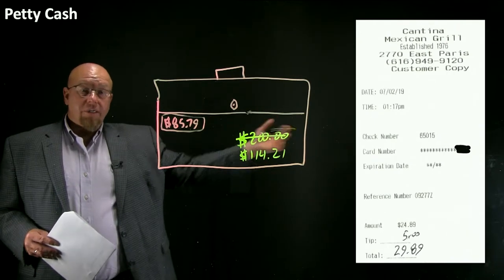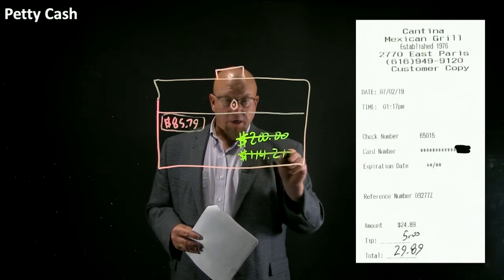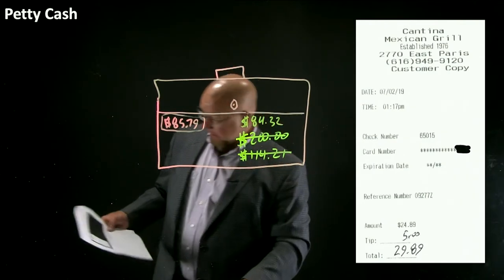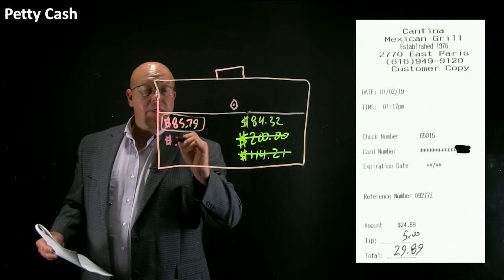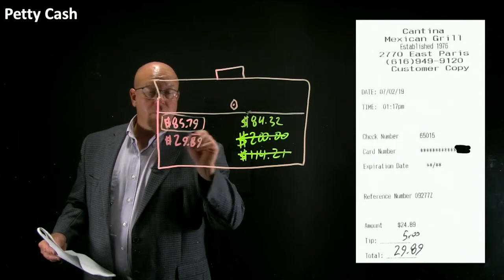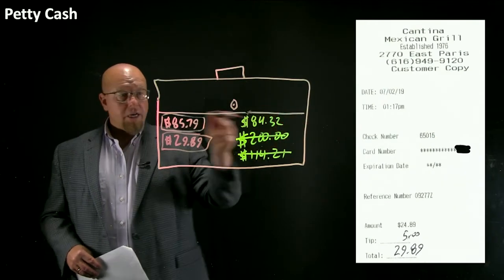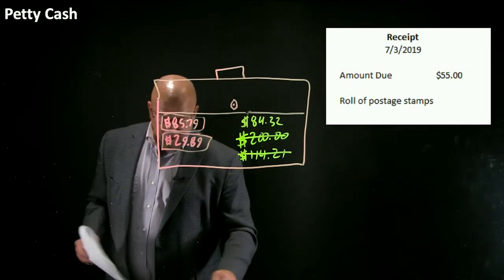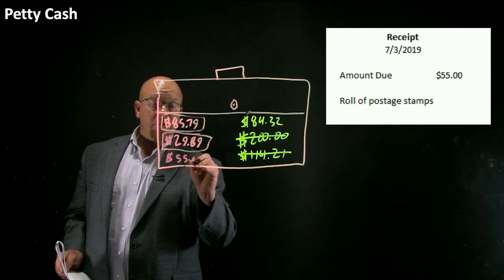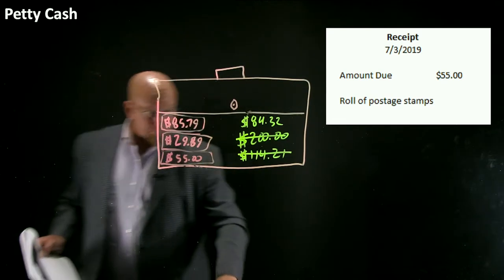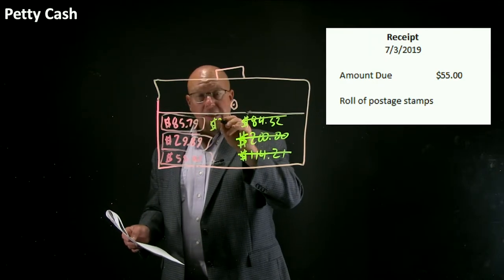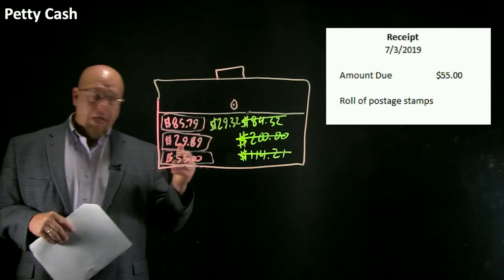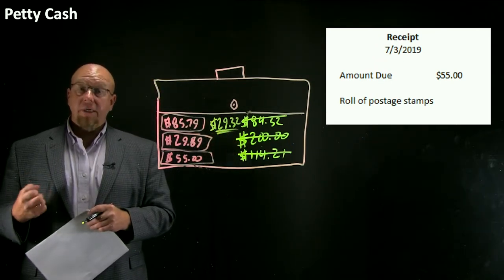We're a hungry office — here's another food receipt. We send somebody out, they get the food, come back with the change and receipt. We've effectively reimbursed them $29.89. Now the box only has $84.32 in it, but we have a second receipt for $29.89. So we're depleting the funds, but the total of the dollars and receipts still adds up to the $200 imprest balance. Then we run out of postage stamps — somebody goes to the post office and comes back with a roll of stamps and a receipt for $55. Now the box really doesn't have much cash — we're down to $29.32. The trial balance will still say petty cash debit balance $200. It's inaccurate, but it doesn't matter — it's immaterial.